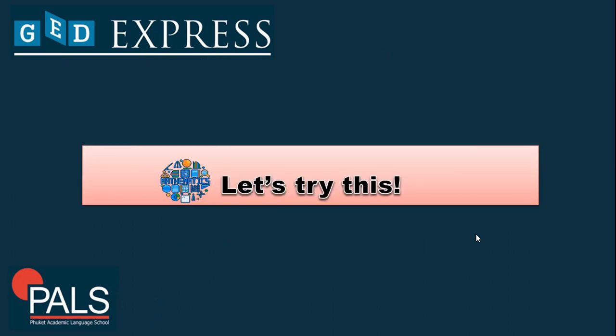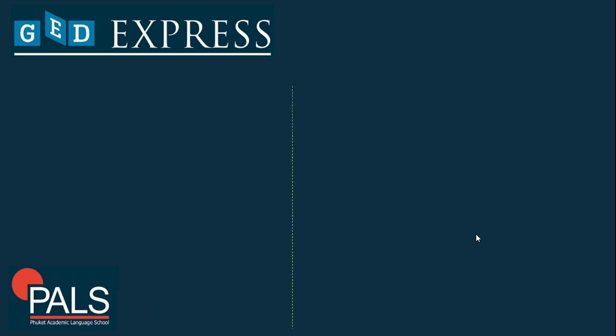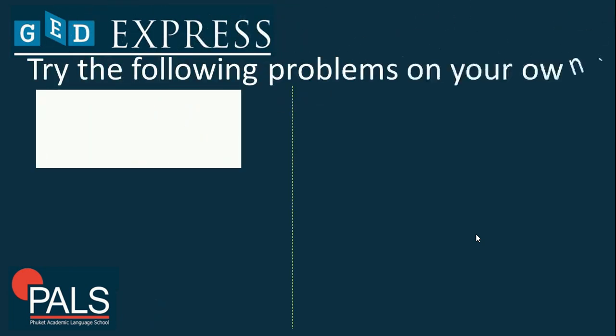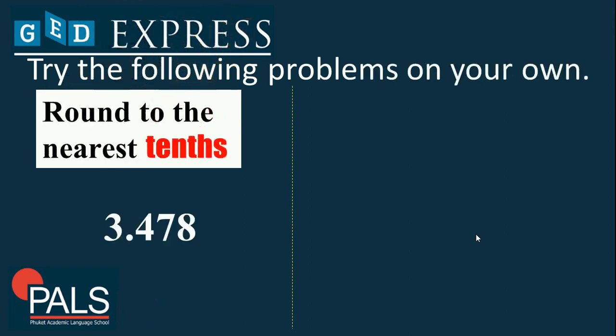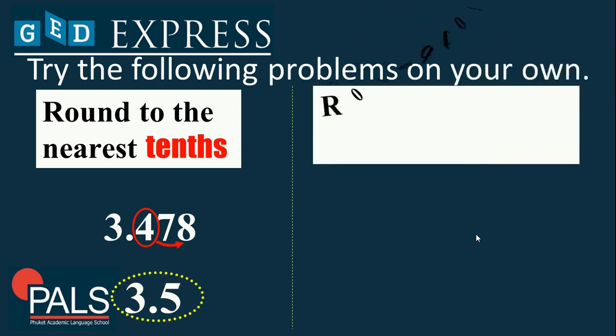Since you already have an understanding of how to identify place value and round off decimals, let's try some examples. Round to the nearest tenths: 3.478. We have 4, which is in the tenths place, and the number after it is 7. Since 7 is greater than 5, the answer becomes 3.5. Exactly.